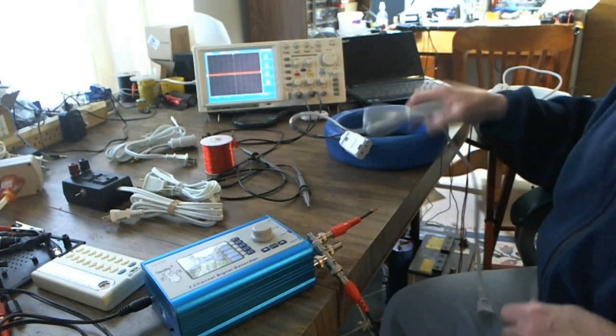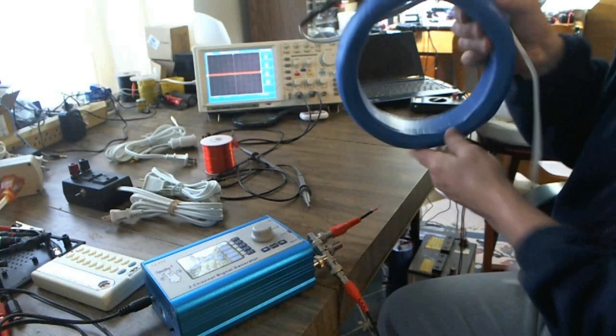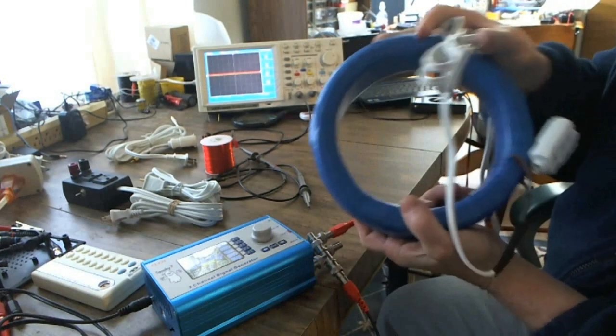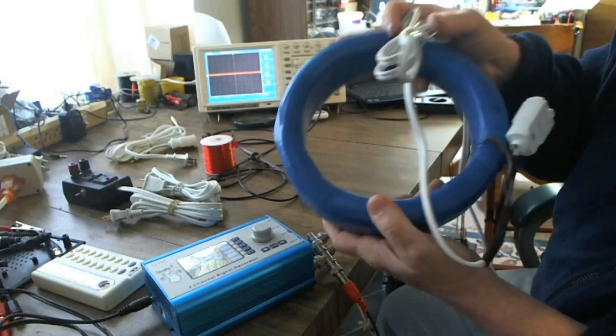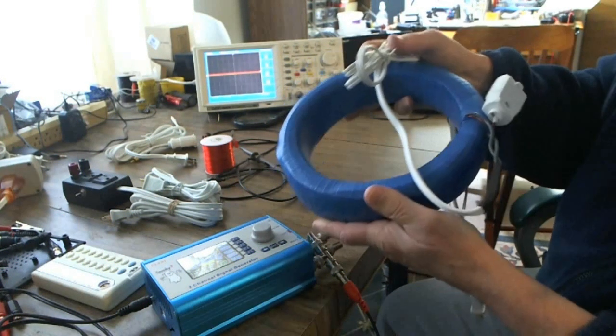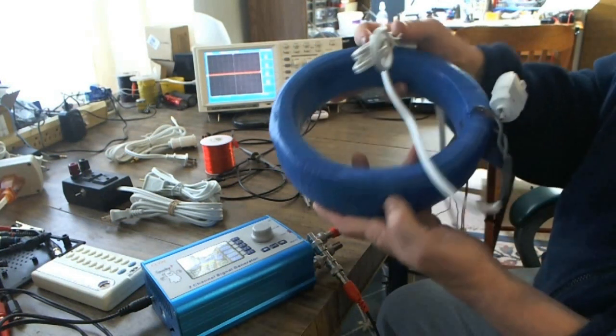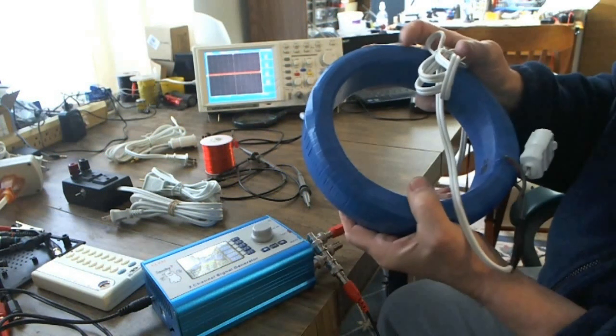So here's the bi-filler coil. It has two windings in the same coil, hence they call it bi-filler. There's a white version and a blue version—it's just the cover wrapping. It has no other significance.